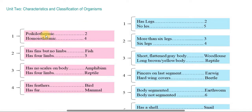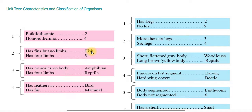Poikilothermic means cold-blooded, and homeothermic means hot-blooded or warm-blooded. If the poikilothermic animal has fins and gills, it is a fish, since poikilothermic means cold-blooded.